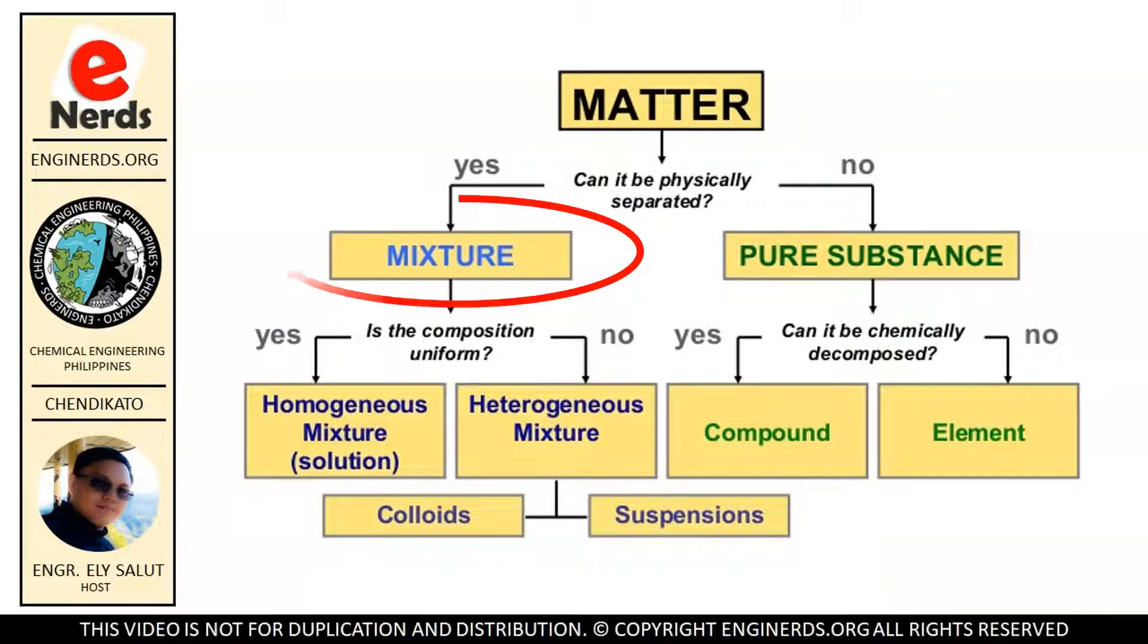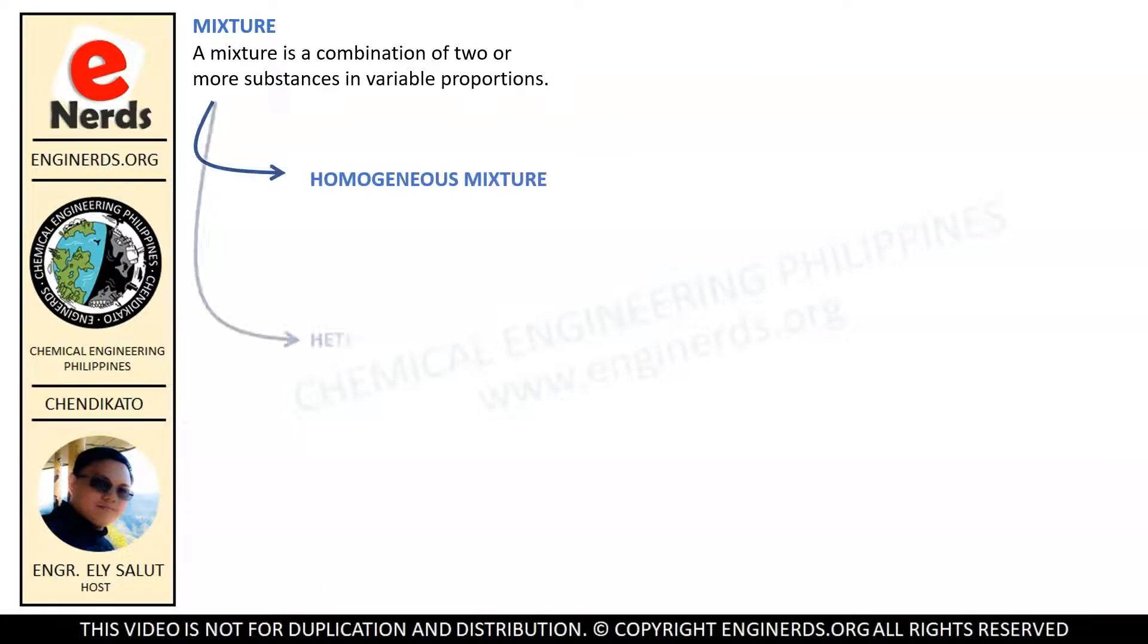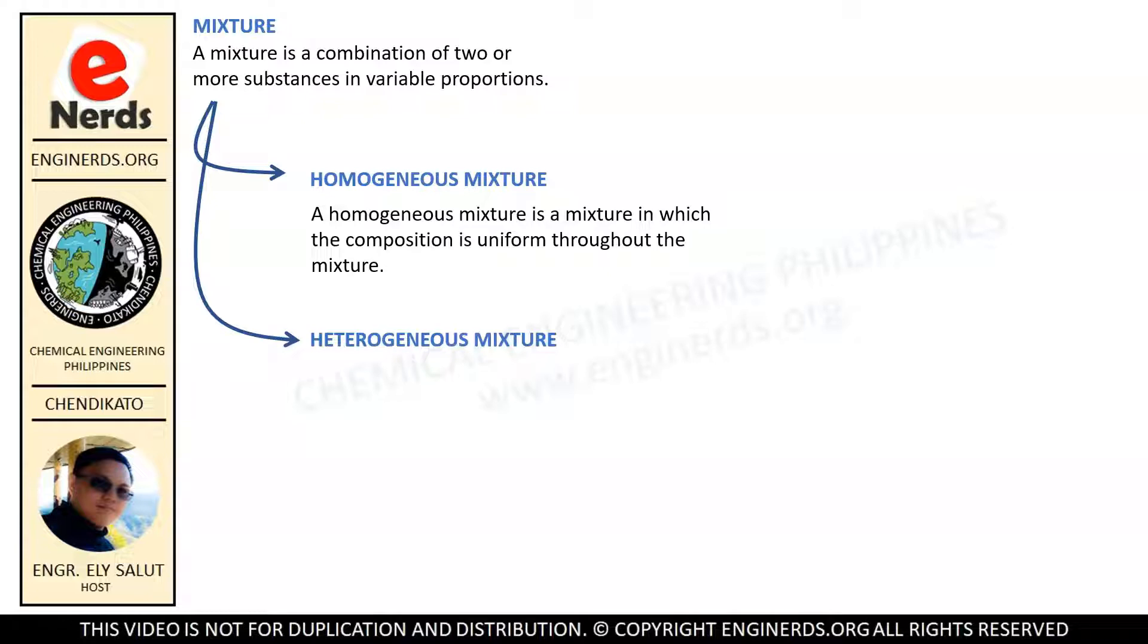And now, let us talk about mixtures. As you can see from the graph, a mixture can either be a homogeneous mixture or a heterogeneous mixture. Let us talk about these types one by one. A mixture is a combination of two or more substances in variable proportions. A homogeneous mixture is a mixture in which the composition is uniform throughout the mixture. For example, a solution is a homogeneous mixture whose composition can be varied, such as the mixture of salt and water.